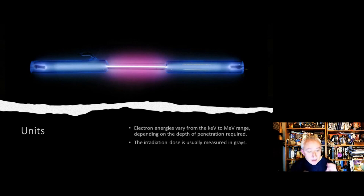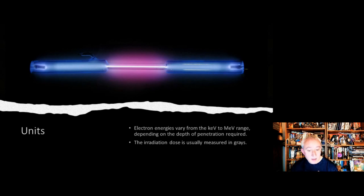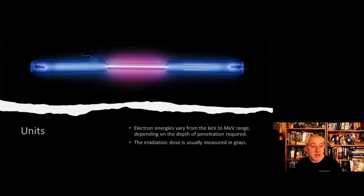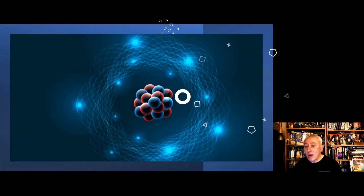The actual irradiation dose is measured in grays or kilograys. The gray is a unit of ionizing radiation dose, defined as the absorption of one joule of radiation energy per kilogram of matter. That's a little bit of background — but what does this actually mean in practice?